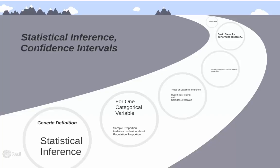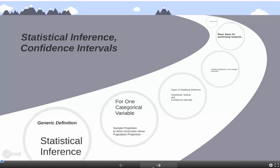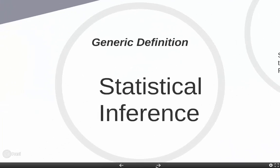We're continuing our discussion with the analysis of one categorical variable, but today we're going to focus on the idea of inferential statistics. We'll look at it from a broad perspective and then try to boil it down into what it would be for one categorical variable. Statistical inference is defined as using data from a sample to draw conclusions about a population.